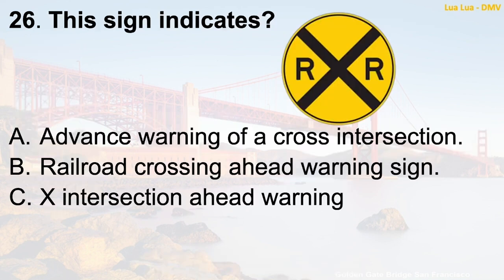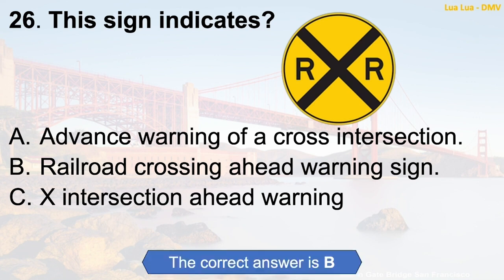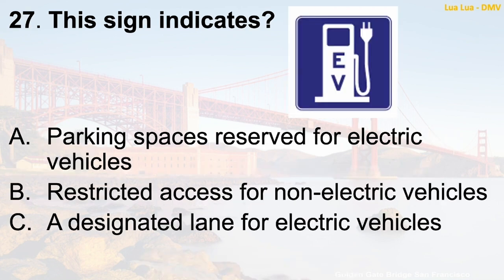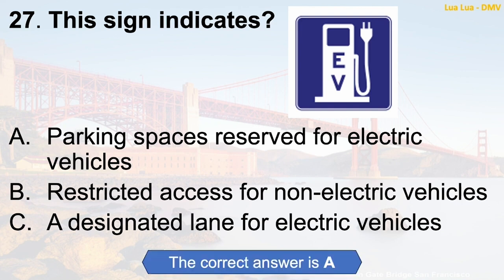Question 26: This sign indicates — A. Parking spaces reserved for electric vehicles. B. Advance warning of a cross intersection. C. Restricted access for non-electric vehicles. D. A designated lane for electric vehicles. The correct answer is A: Parking spaces reserved for electric vehicles.